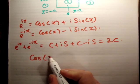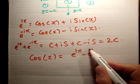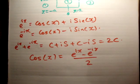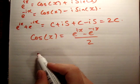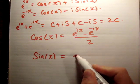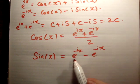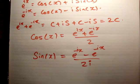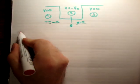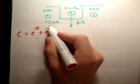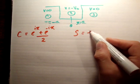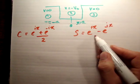So if we rearrange that, we find that cos x is equal to (e^(ix) + e^(−ix)) / 2. And if you take these two away from each other, you're going to find that sin x is equal to (e^(ix) − e^(−ix)) / (2i).